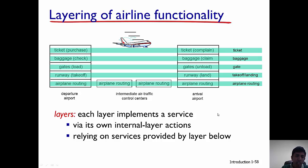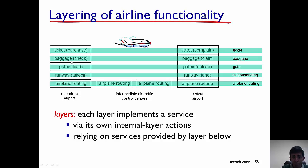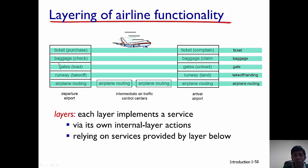The important thing to note here is that each layer does not have all services. A layer two device does not have the transport and application layer services implemented. For example, when you are at the gate, not all five layers are implemented there. Other devices such as switches and routers only have two or three layers respectively.